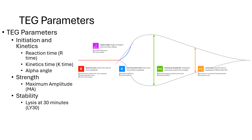The alpha angle is also dependent on fibrin amplification and crosslinking as the thrombus begins to propagate. Next is the MA, or maximum amplitude — this is the overall strength and stability of the clot, dependent primarily on platelets (around 80%) and fibrinogen (around 20%). Next is LY30, or lysis at 30 minutes — this is the percentage decrease in amplitude at 30 minutes relative to the maximum amplitude, and is dependent on the presence and severity of fibrinolysis.